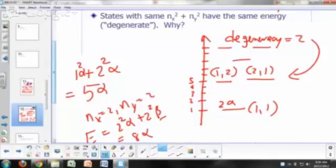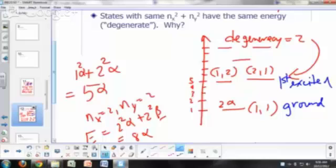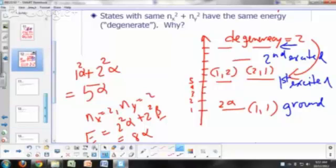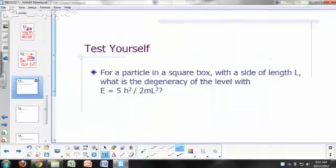So you would say this is your ground state, ground energy level. This is your first excited energy level. The first excited energy level has a degeneracy of 2. The second excited energy level would have a degeneracy of 1. And the third excited energy level would have a degeneracy of 2. So that's the pattern.